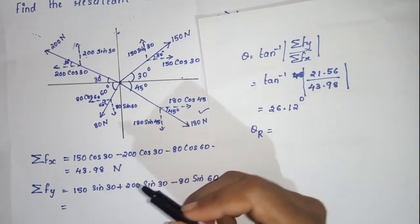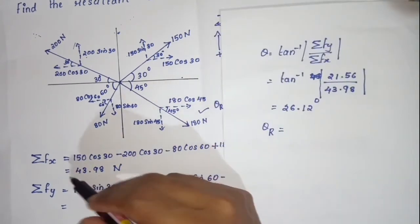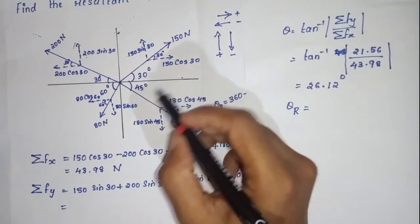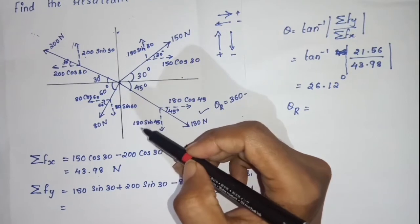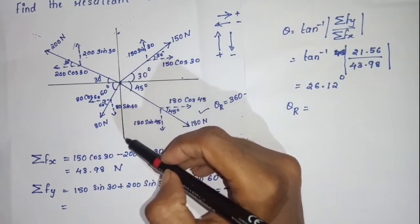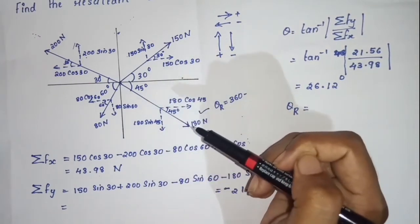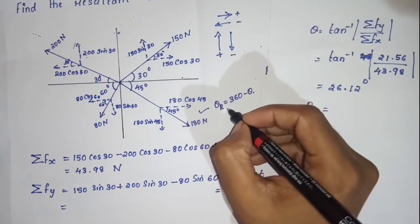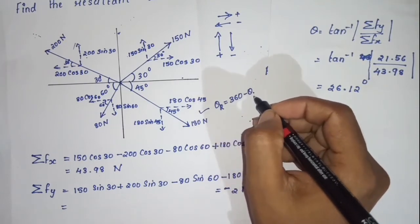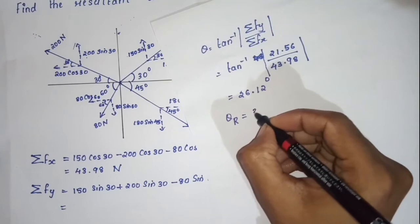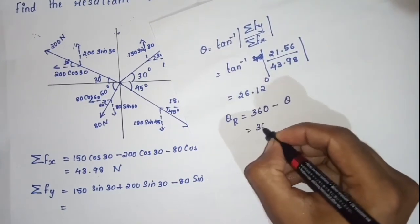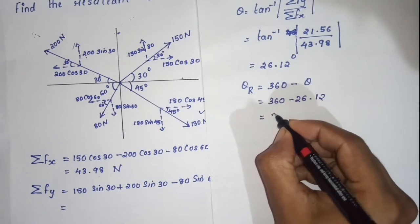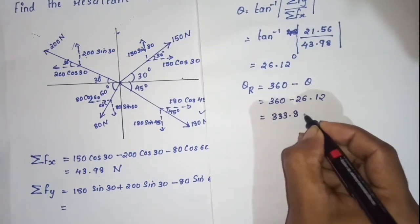Looking at the values: sigma Fx is positive and sigma Fy is negative. X component is positive and y component is negative. That places the resultant clearly in the fourth quadrant. So theta R is equal to 360 minus theta, which is 360 minus 26.12, and that equals 333.88 degrees.